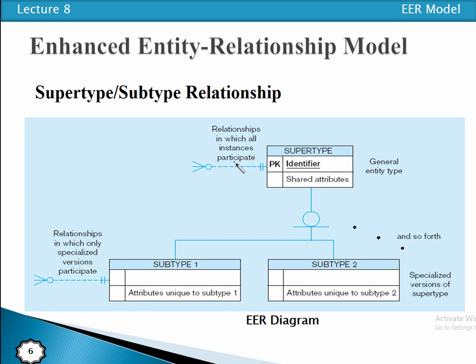Regarding relationships: at the super type level, all instances — whether instances of the super type or any participating sub type — participate in the relationship. While relationships at the sub type level are only specialized versions related to only the specific sub type.